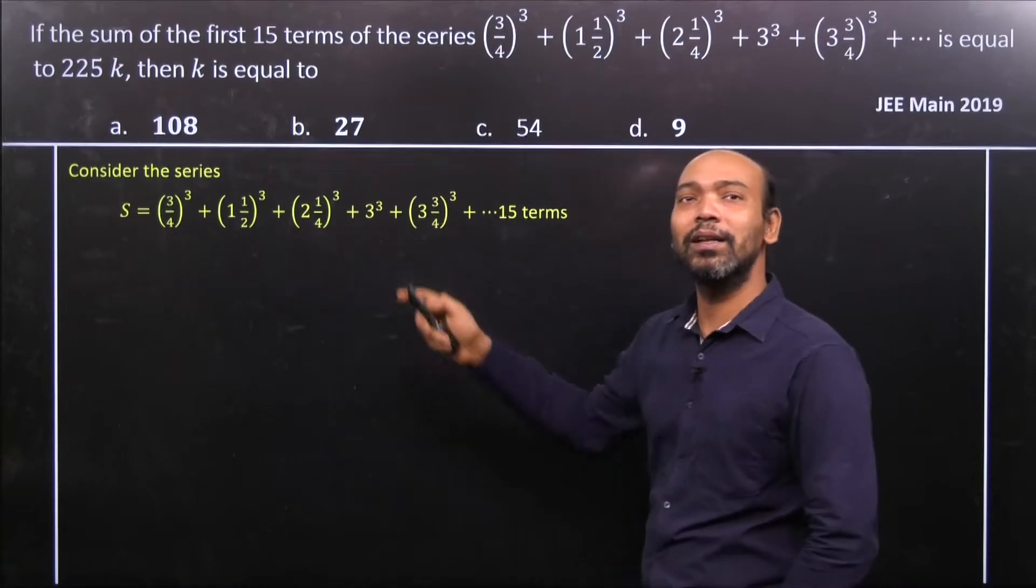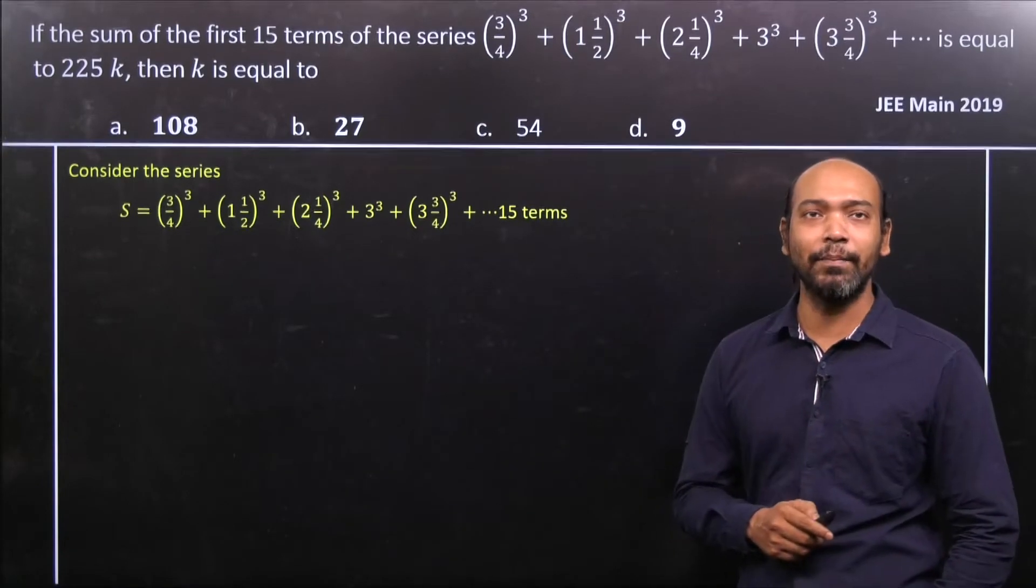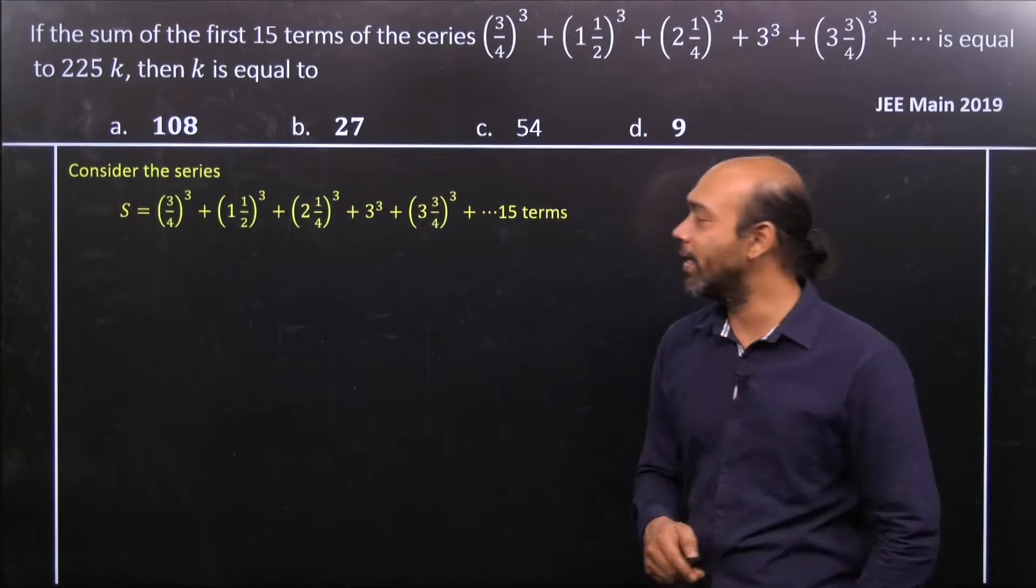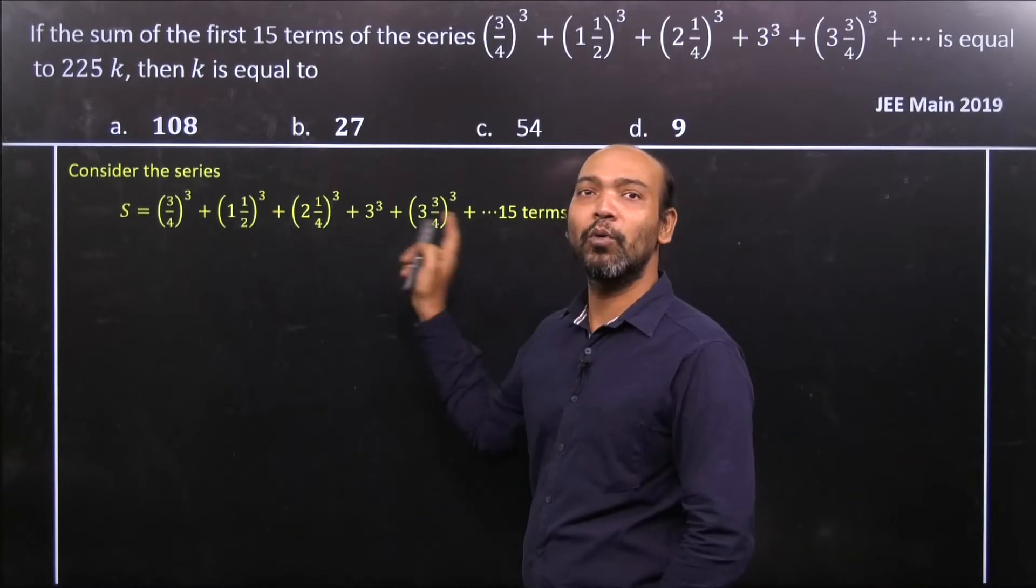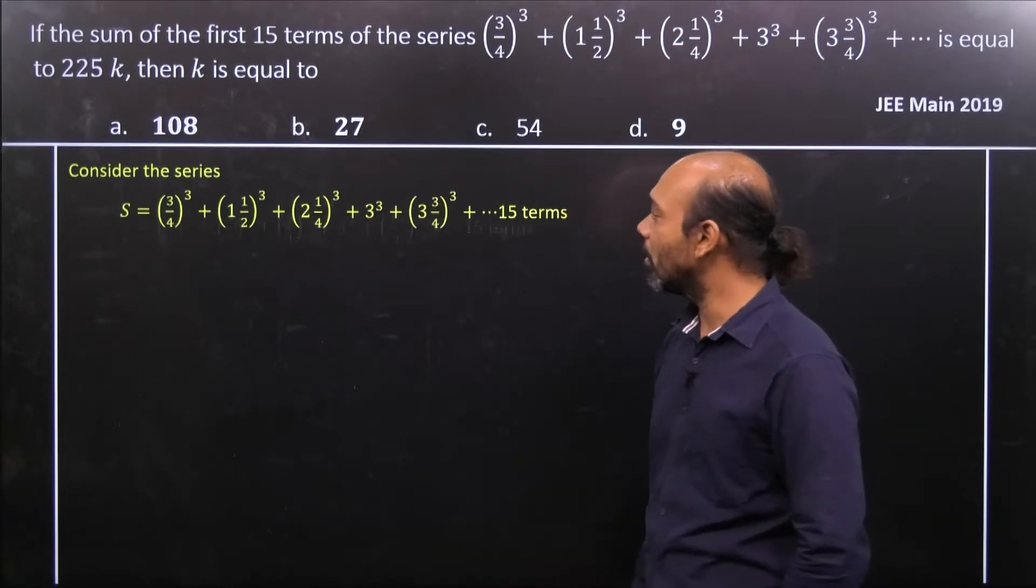So just convert it to normal fraction p/q form. What's that? It is 3/2, this is 9/4 and so on. So if I go ahead and write down that particular way, we can see this is (3/2)³, (9/4)³ and so on.